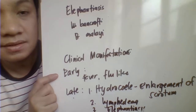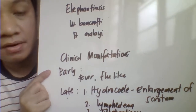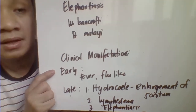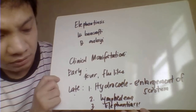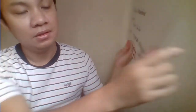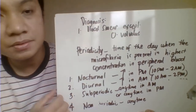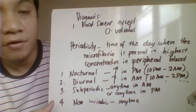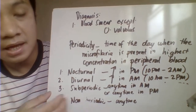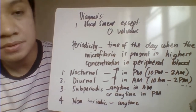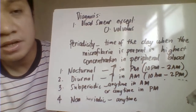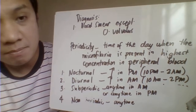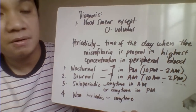Examples of elephantiasis include hydrocele — enlargement of the scrotum in male patients — and lymphedema. For diagnosis, filarial worms found in peripheral blood can be identified by blood collection for microfilaria identification using thick and thin smear. However, for filarial worms found in subcutaneous tissues, such as Onchocerca volvulus and Dracunculus medinensis, they are not found in peripheral blood and therefore cannot be identified by thick and thin smear.